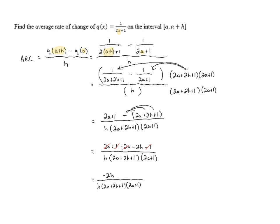And then we can cancel out the h in the top and bottom. That is a common factor that the top and bottom share. And so that leaves us with our final answer, negative 2 over 2a plus 2h plus 1 times 2a plus 1. And this gives us our final answer.